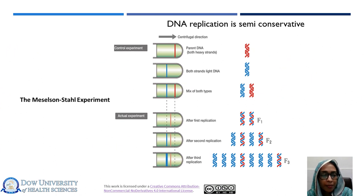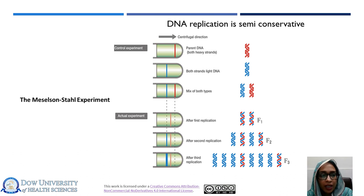The concept of semi-conservative DNA replication was initially proven and coined in 1958 by two young scientists, Matthew Meselson and Franklin Stahl — referred to as the Meselson-Stahl experiment. They set out to find possibilities that correctly describe the process of DNA replication. The idea was to allow parental DNA molecules containing nucleotides of one density to replicate in a medium containing nucleotides of different density.